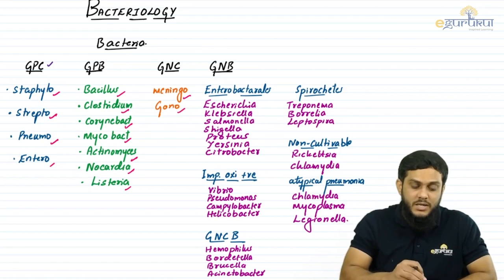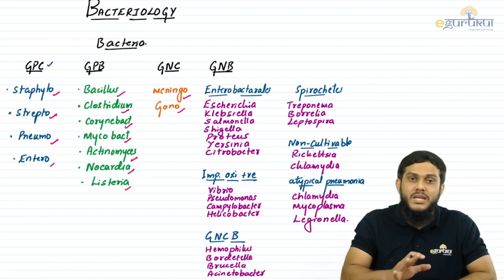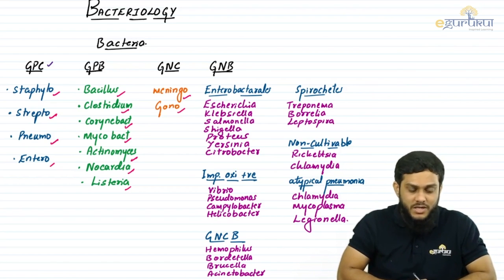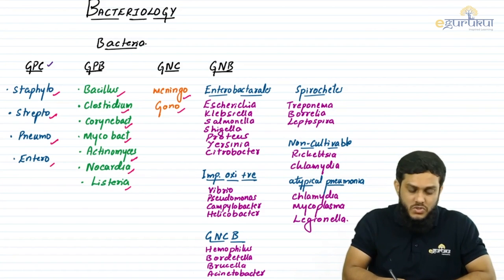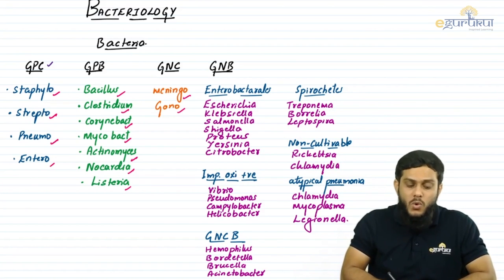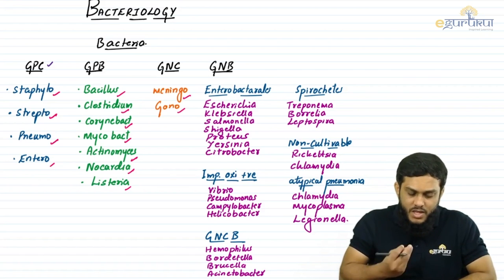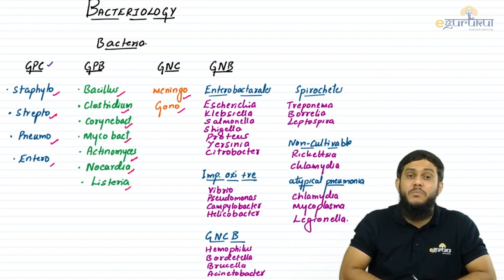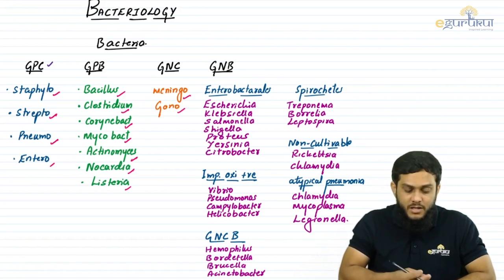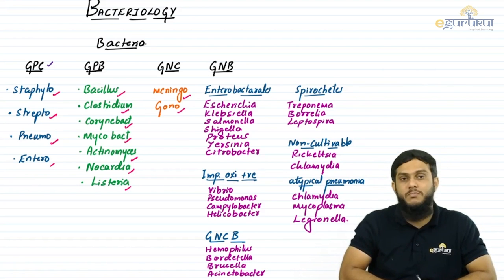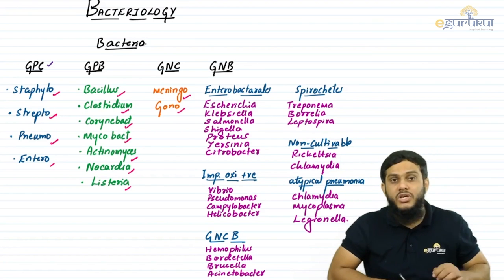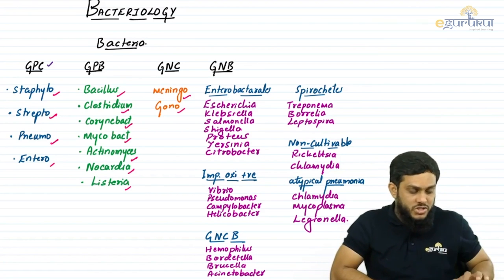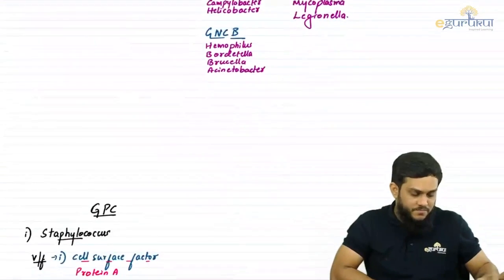All remaining bacteria are gram negative bacilli. There are many gram negative bacilli, classified into enterobacteriaceae, oxidase positive bacteria, coccobacilli, spirochetes, non-culturable bacteria, and atypical pneumonia-causing bacteria. With this introduction to bacteriology, let's start with gram positive cocci.